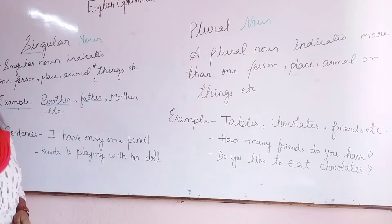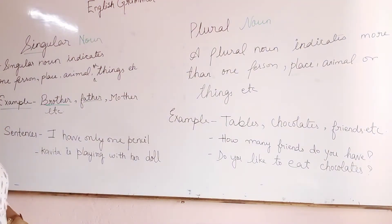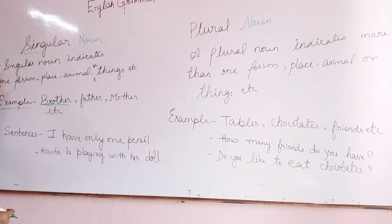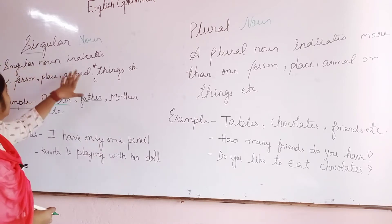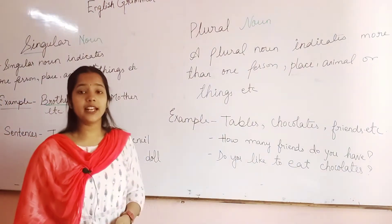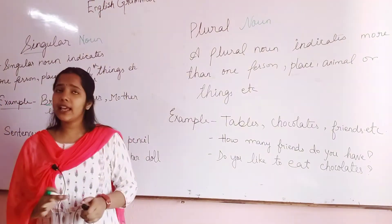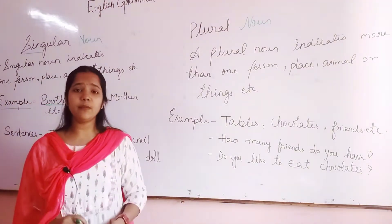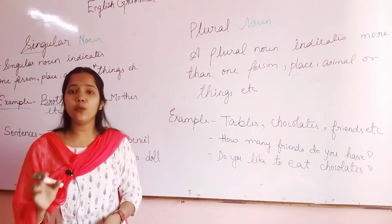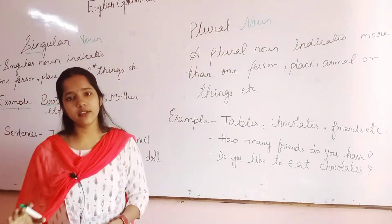So what does the word 'singular' mean? Singular means a thing which is only one — not more than one. So let us read this definition. What is the definition of singular noun? Singular noun indicates one person, animal, or thing. Anything — any name, any person's name, any animal's name — anything which is only one comes under singular noun.